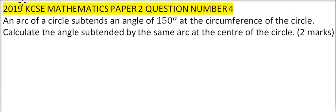2019 KCSE Paper 2, Number 4. We are told an arc of a circle sustains an angle of 150 degrees at the circumference of the circle.